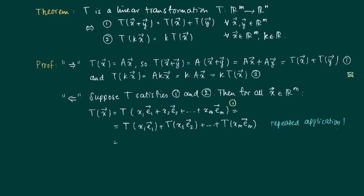But then look more closely. The x1, x2, etc., these are scalars, so we can take them out by property 2. Property 2 says that we can take out any scalar k. So now here we write instead of T(x1e1), we write x1 times T(e1), etc., and take a sum.